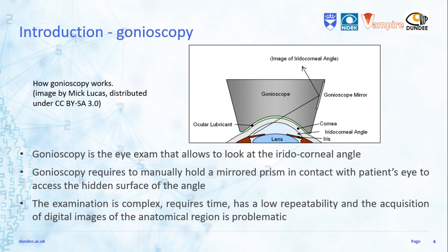Gonioscopy is a difficult technique that requires experience and takes time. It also makes the acquisition of digital images of the eye region problematic.